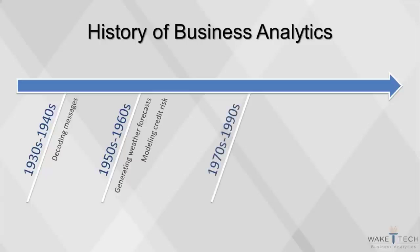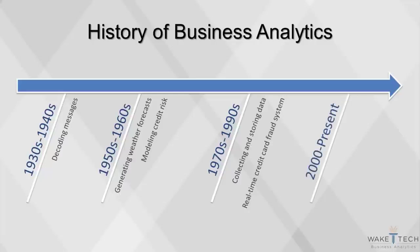Toward the end of the 20th century, as computing power became more affordable, more organizations began collecting and storing data. The types of analytical projects transitioned from being historical in nature to real-time. In 1992, the first real-time credit card fraud system was introduced. Then the first analytically-centric companies emerged. Companies such as Google use data to build their core product, while other companies such as Amazon use analytical techniques to earn market share from competitors. The rapid ascension of these tech companies has led to an arms race, where all businesses have become committed to analytics.